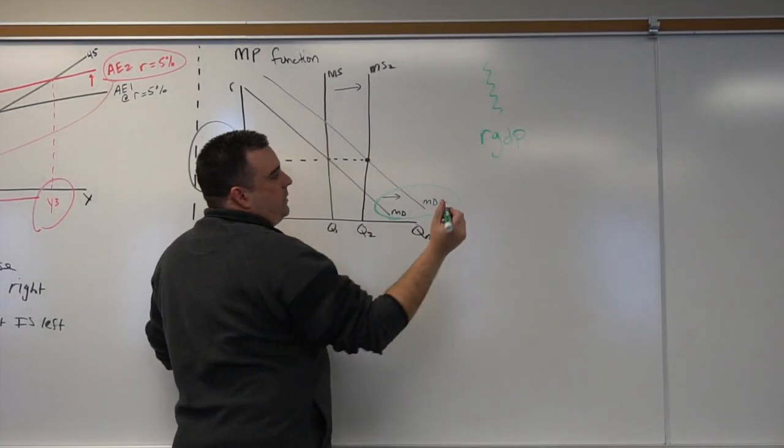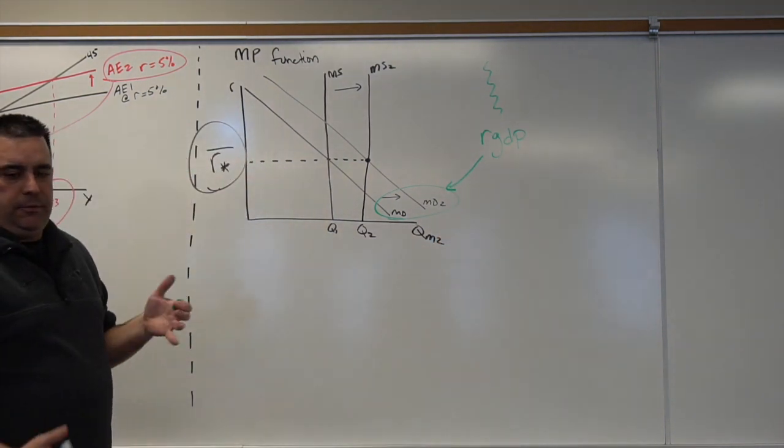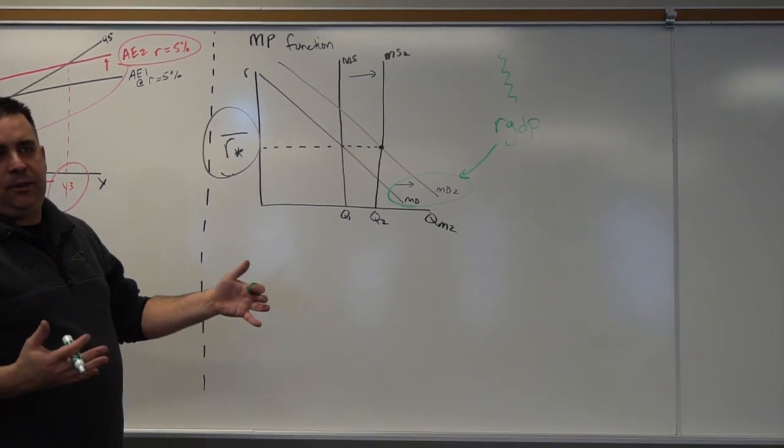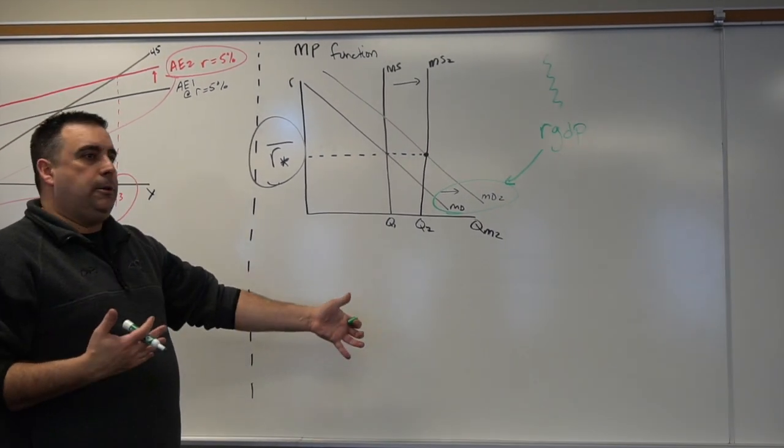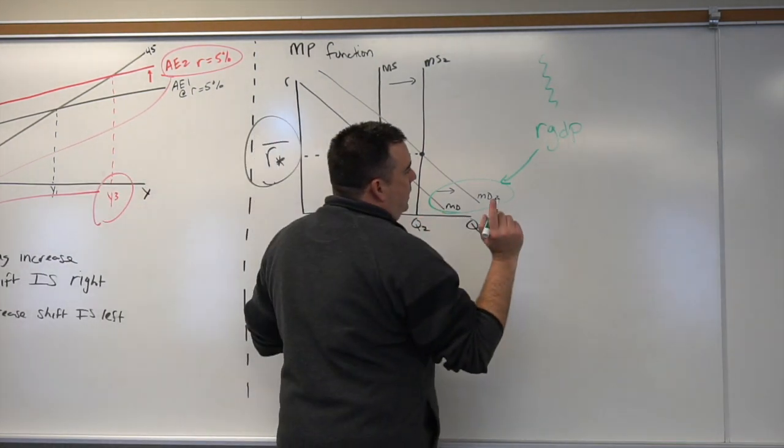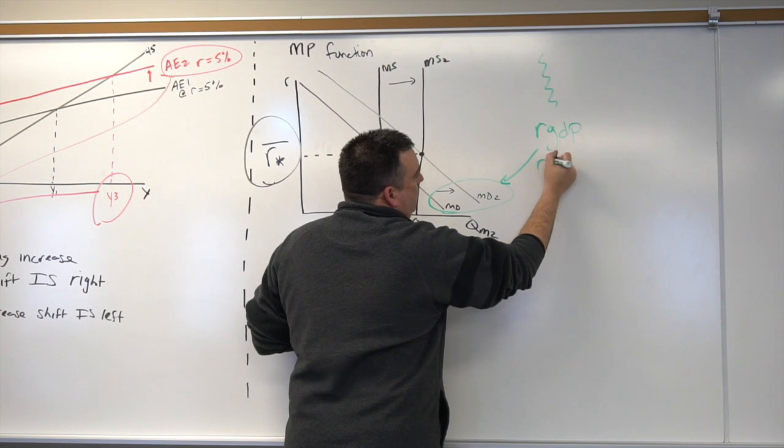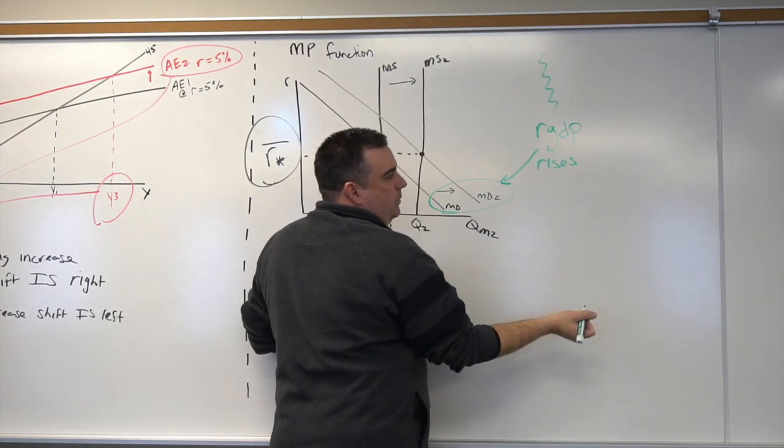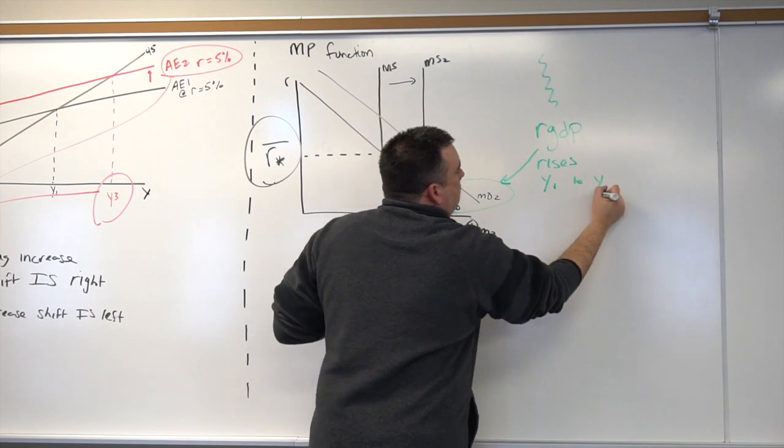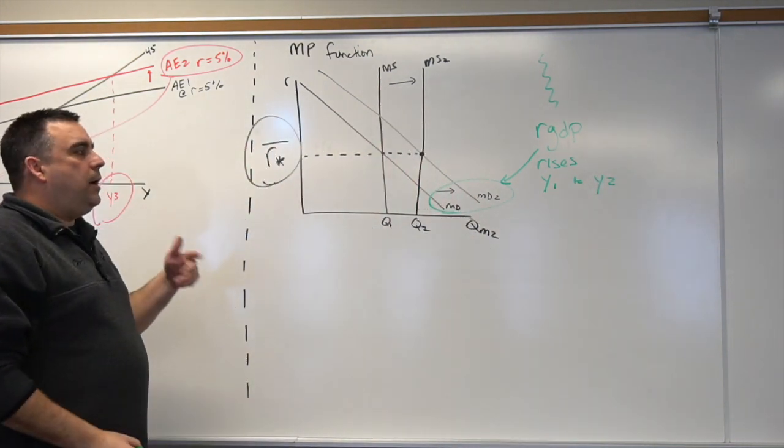That changes in real GDP can shift money demand. If we think about that, we said that an increase in real GDP would be reflected as an increase in money demand. People need more money for transactions. Transactions are buying production. Production increases. So in this case right here, we see that real GDP rises, effectively it goes from Y1 to Y2.